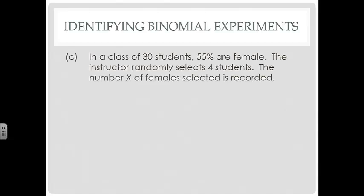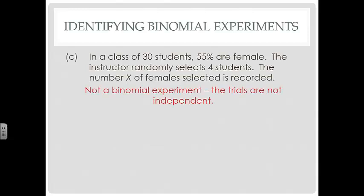In a class of 30 students, 55% are female. The instructor randomly selects four students, and the number X of females selected is recorded. The trials in this case are not independent, so this is not a binomial experiment.